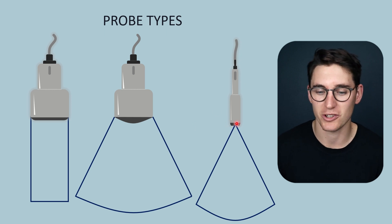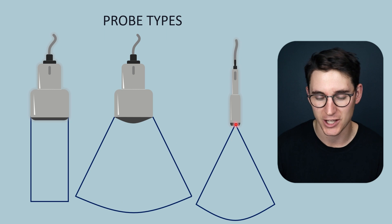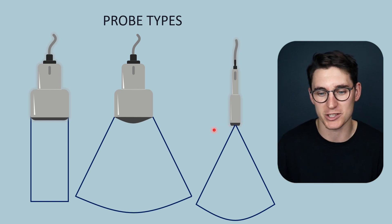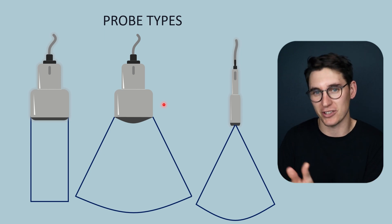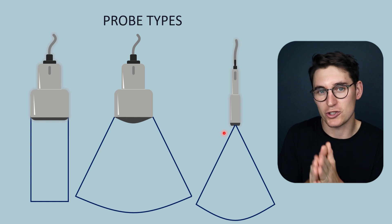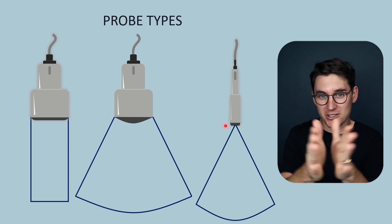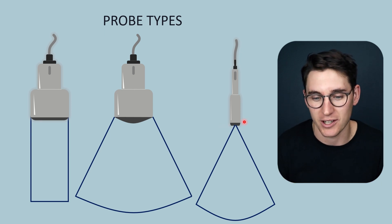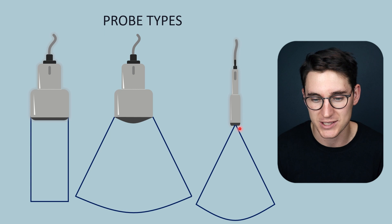The phased array probe has a much smaller face to the transducer and it has a pure sector — not a blunted sector. We get this fanning out of the ultrasound wave. The phased array probe has much fewer transducer elements than our linear and curvilinear probes. Linear and curvilinear probes generally have 200 to 300 discrete transducer crystals, while the phased array probe generally has 64 to 128. This smaller surface area still allows a large field of view — for example, we can get between the ribs and still capture the entire heart within our field of view.